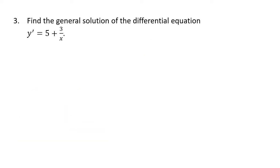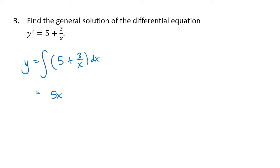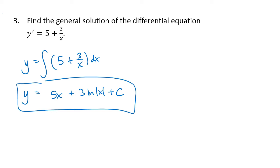One more of these, then we'll move on to another type of problem. We're just taking the antiderivative of 5 plus 3 over x. The antiderivative of 5 is 5x, and the antiderivative of 3 over x is 3 times the natural log of the absolute value of x, plus c, and that's our solution.